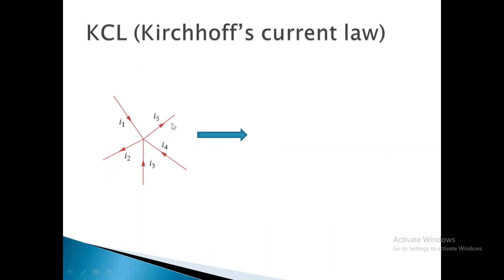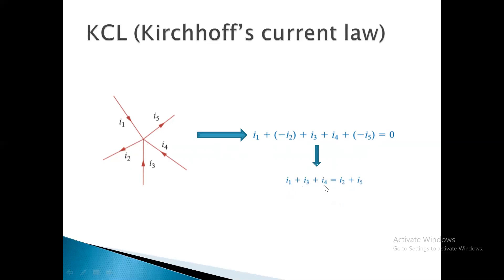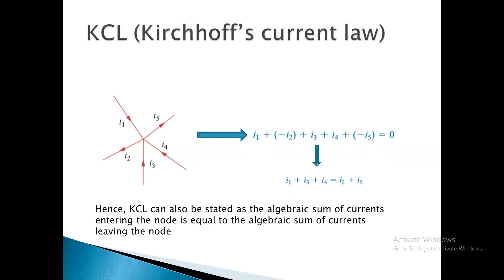Applying KCL: the sum of current entering is equal to the sum of current leaving. The currents entering are I1, I3, and I4, while I2 and I5 are leaving. I2 and I5 are added on the negative side, and the entering currents on the positive side. This gives us the KCL statement: the algebraic sum of current entering the node is equal to the algebraic sum of current leaving the node. Both statements are valid.